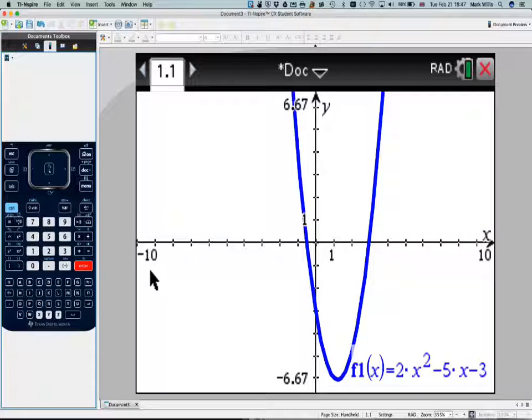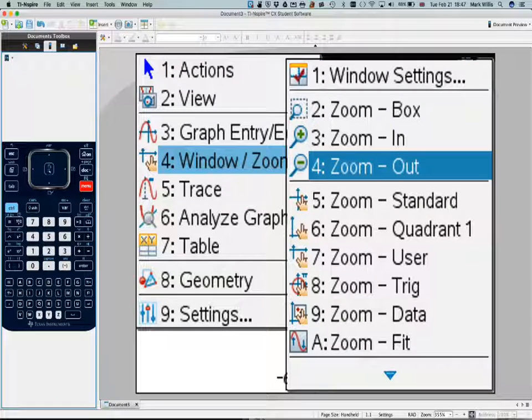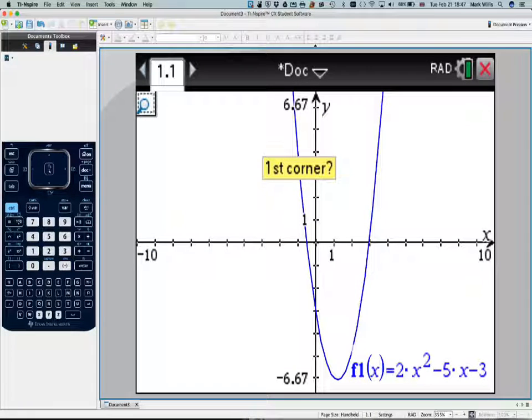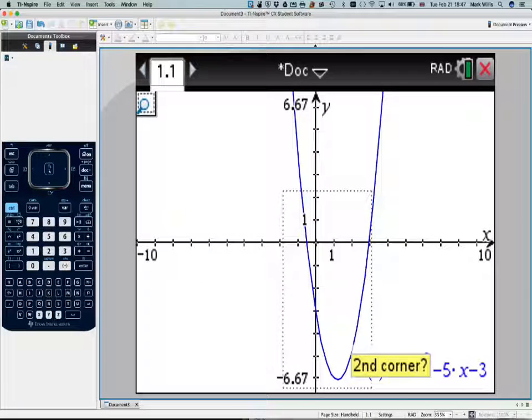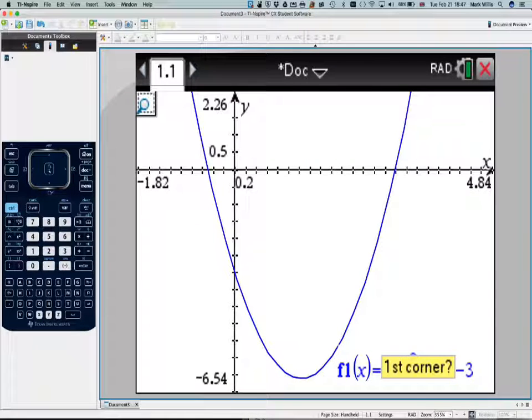And I'm just going to zoom in a little bit, so we'll do a box zoom. So, number 4, zoom, number 2, box, and we'll box in on this bit here. So we go, visible graph, press escape.